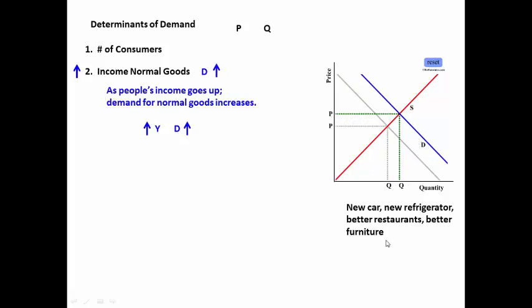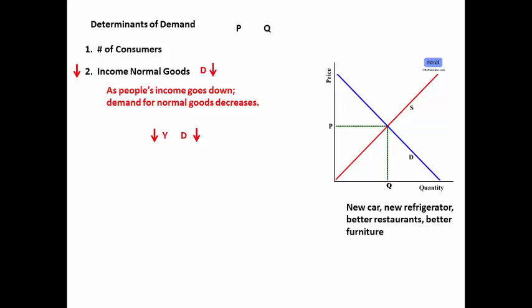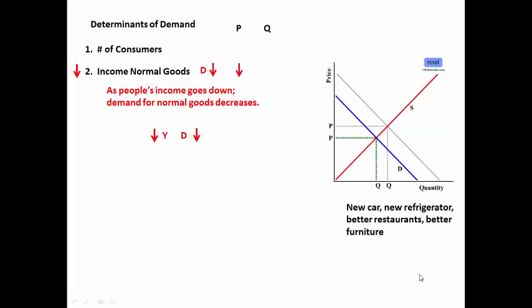increasing the price and increasing the quantity. As people's incomes go down, demand for normal goods decreases. So as income (Y) goes down, then demand decreases, causing the curve to shift to the left, driving the price down and the quantity down.